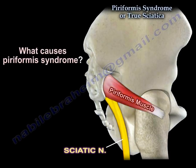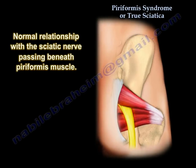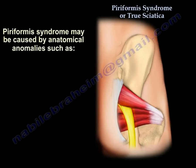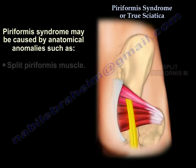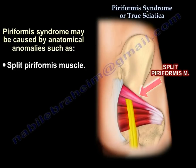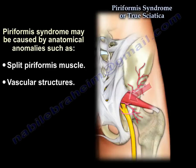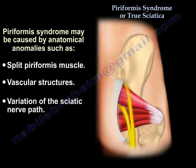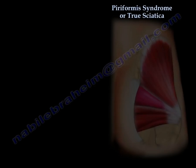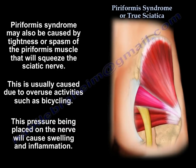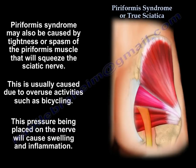What causes piriformis syndrome? Anatomic anomalies such as a split piriformis, vascular structures, or variation of the sciatic nerve path. The syndrome can also be caused by tightness or spasm of the piriformis muscle that squeezes the sciatic nerve — usually from overuse problems such as in bicycling — causing swelling and inflammation of the nerve.